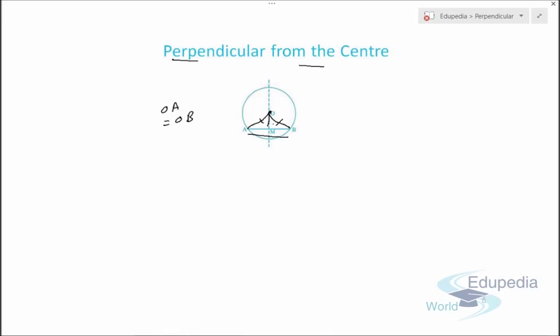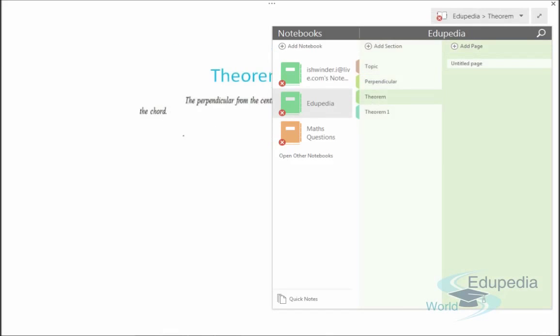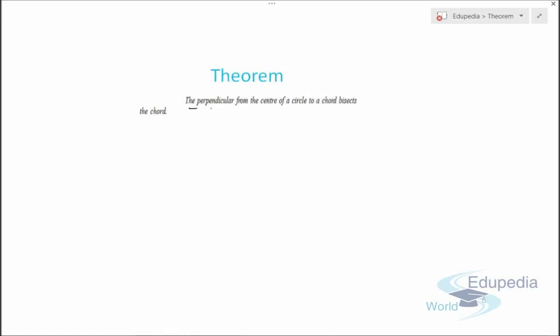The concept is that if we draw any perpendicular to the chord from the center of a circle, then that perpendicular divides the chord into two equal halves. So we can say that MA equals MB. Now let's discuss the first theorem: the perpendicular from the center of a circle to a chord bisects the chord.